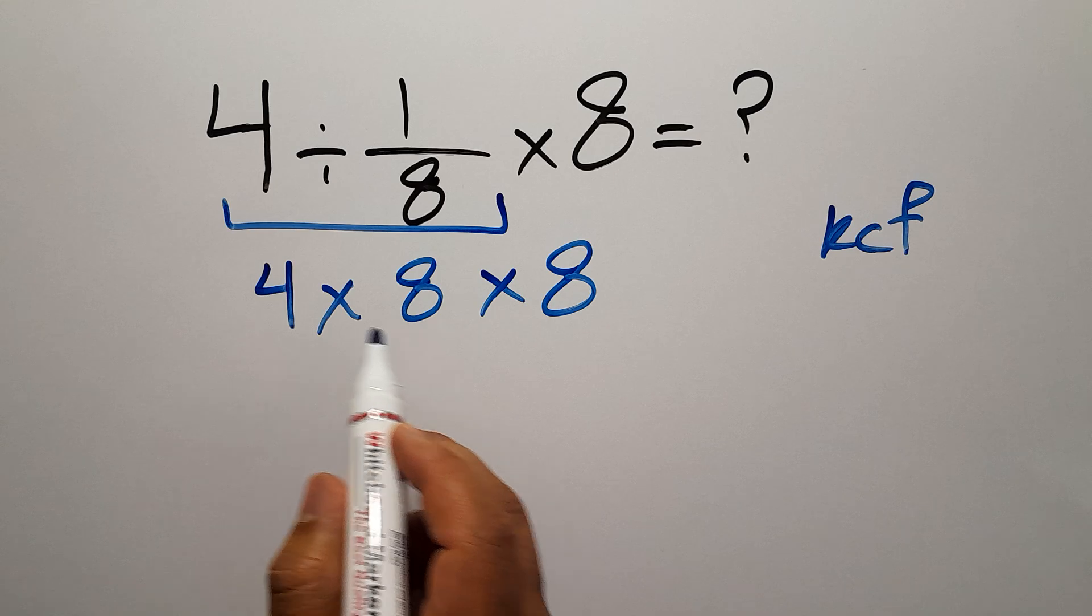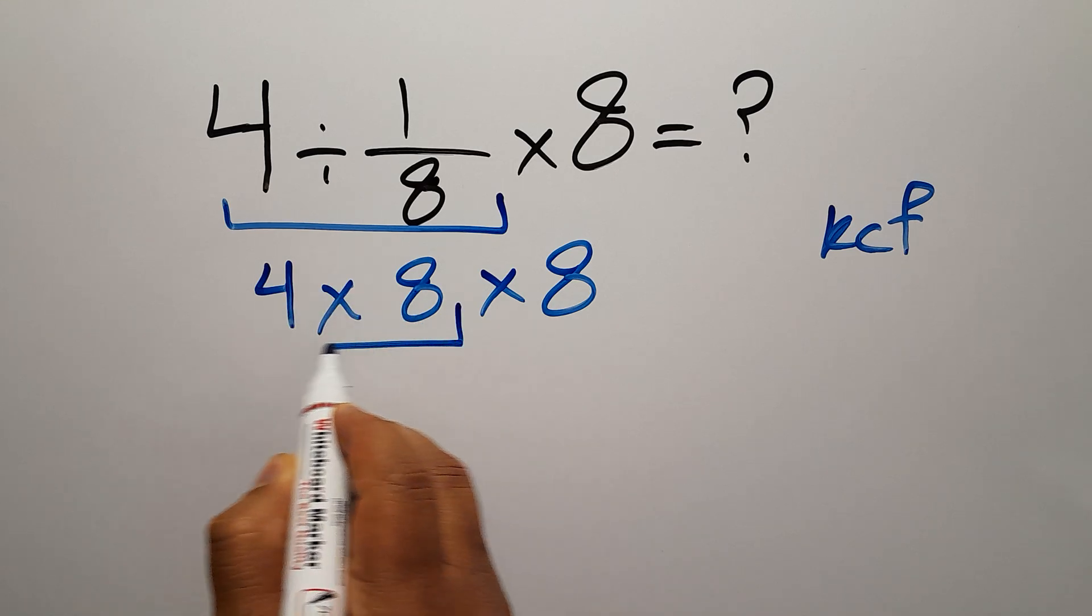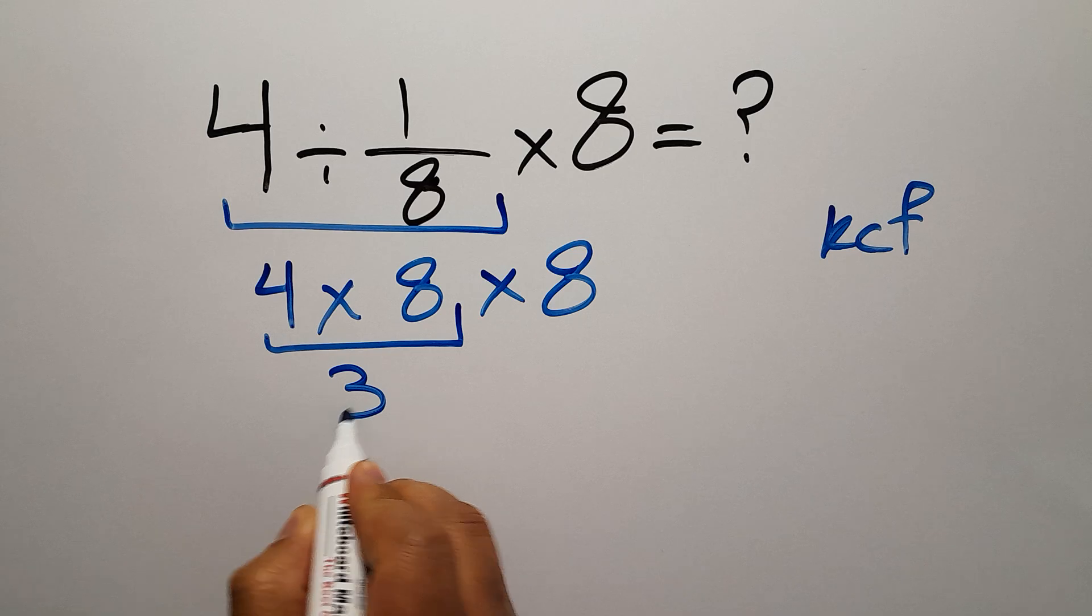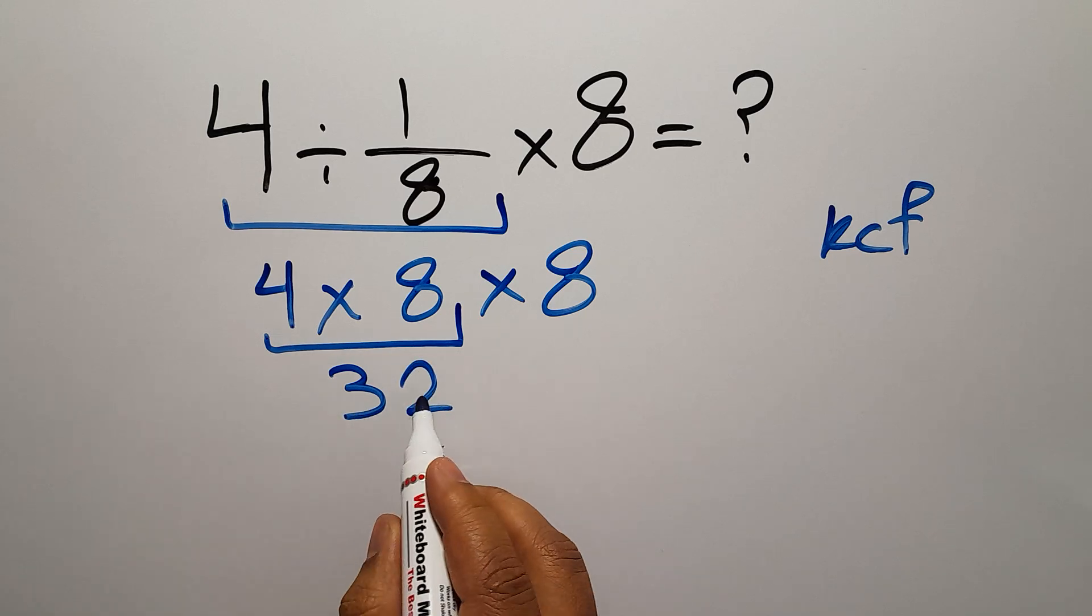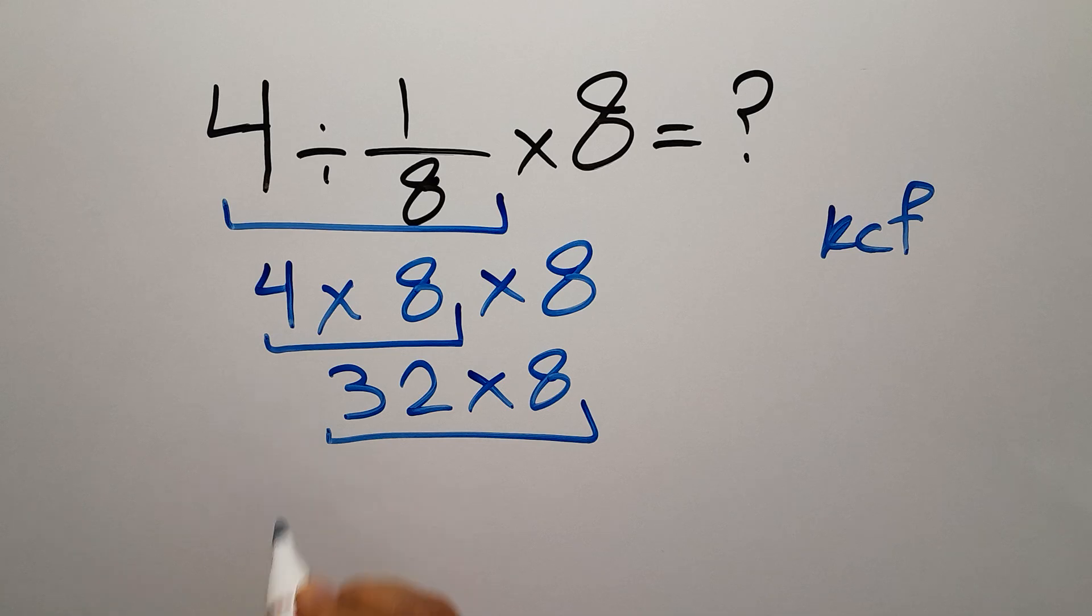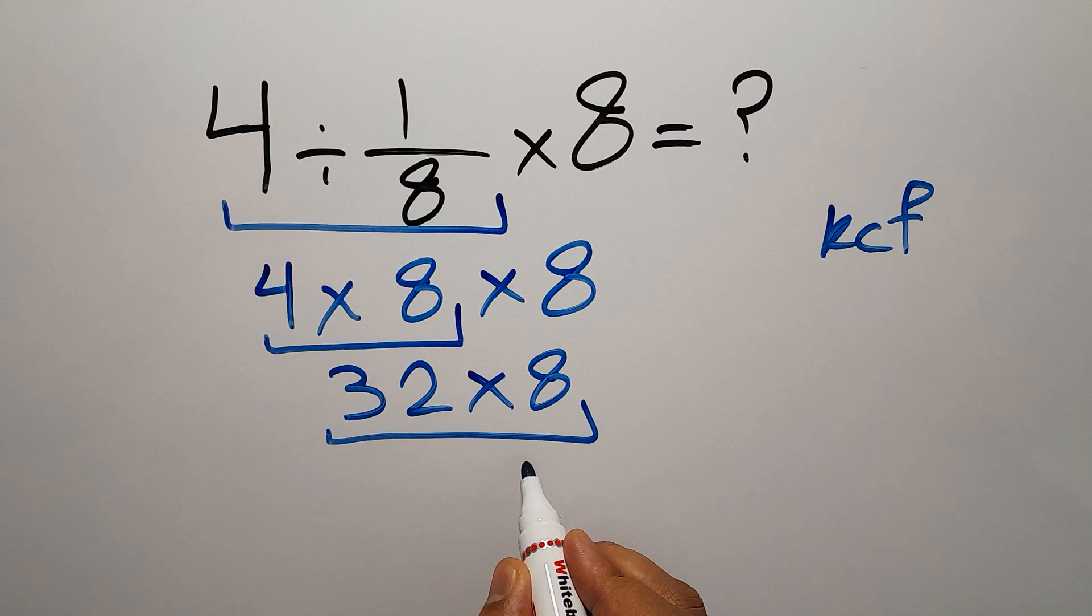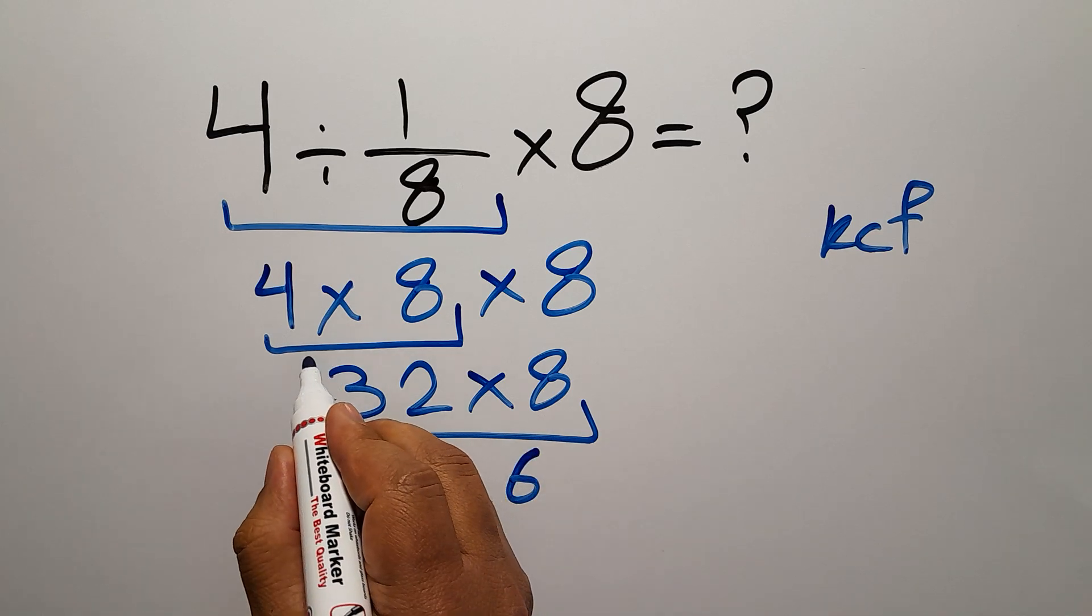So first this multiplication: 4 times 8 gives us 32. So 32 times 8.